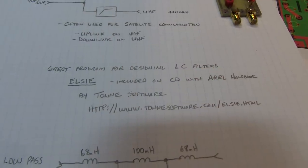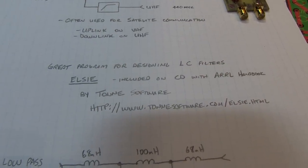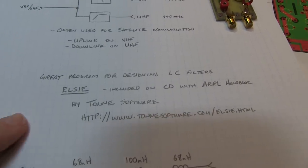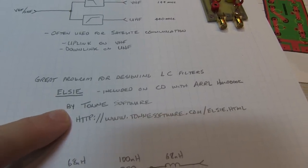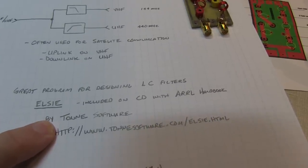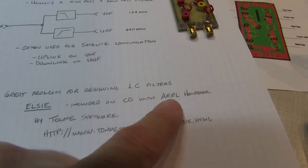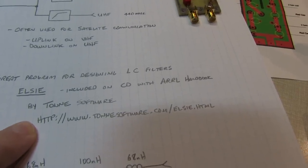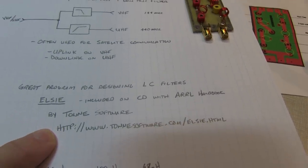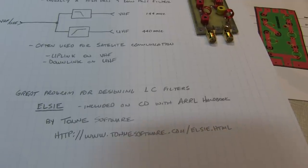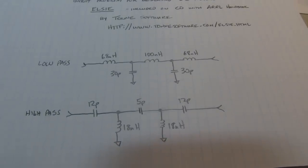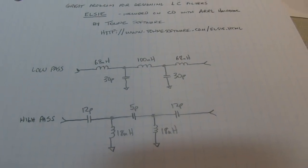In the article, Ron talks about using a program to design the lumped element LC filters. He used a program called LC, available from TAN Software. It's also included on the CD that comes with the ARRL handbook. There's a limited free version available and a version you can pay for that has more features.